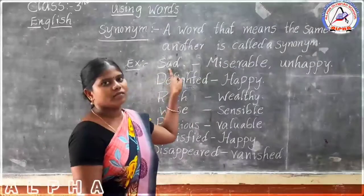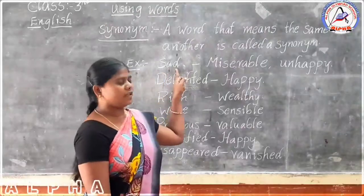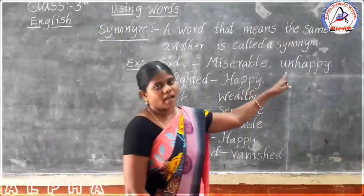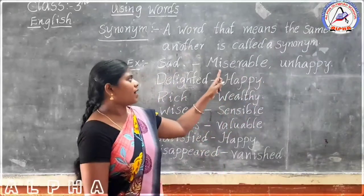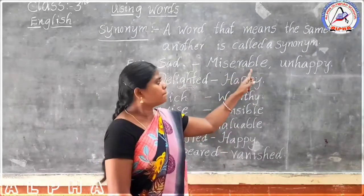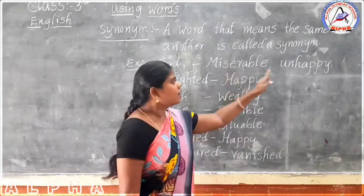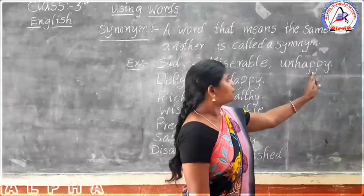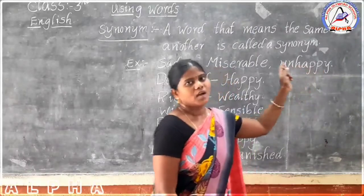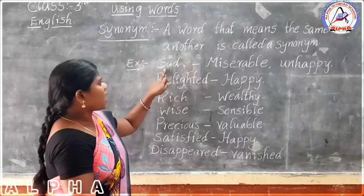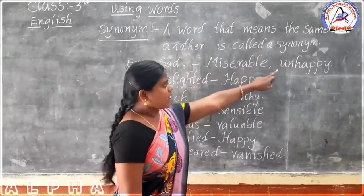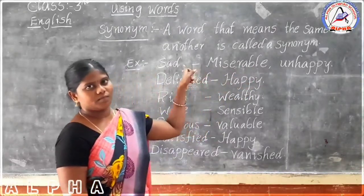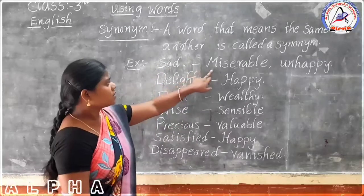Sad — S-A-D. Miserable — M-I-S-E-R-A-B-L-E. Unhappy — U-N-H-A-P-P-Y. Sad, miserable, unhappy — these three words are the same. This is called a synonym.